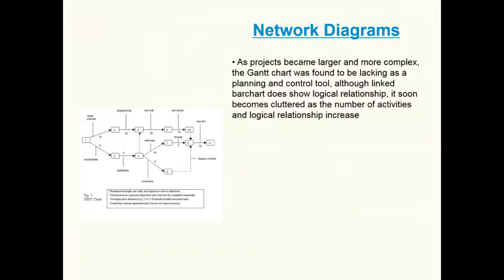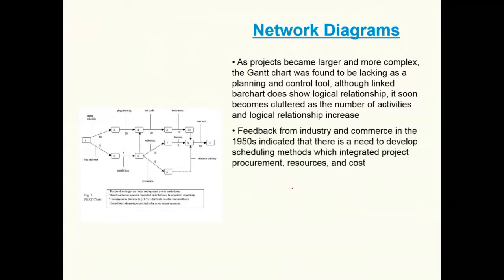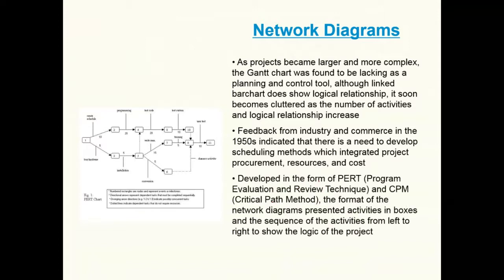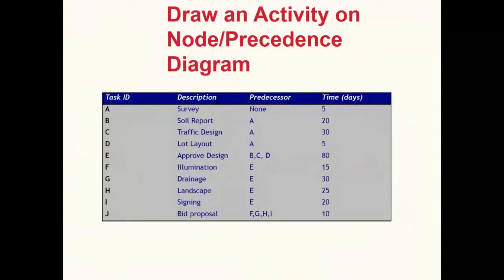As projects become larger and more complex, Gantt charts can be lacking, and a network diagram is a quick visual way to explain logical relationships between different work packages. It has been used extensively across different industry sectors as a good visual communication tool. It was developed in the form of PERT — Program Evaluation and Review Technique — and CPM. Activities are presented in boxes in sequence from left to right to show the project logic, and all modern software supports the development of network diagrams.